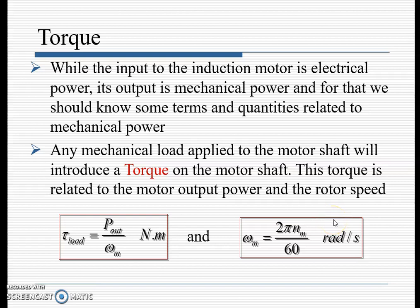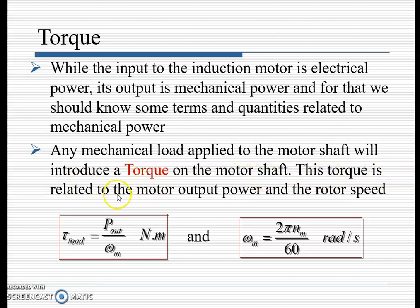Let's continue with the second video on induction motor torque. While the input to the induction motor is electrical power, its output is mechanical power. Any mechanical load applied to the motor shaft will introduce a torque on the shaft. This torque is related to the motor output power and the rotor speed. The formula for torque is T = P_out / ω_m, where the units are Newton-meters, and ω_m = 2π·n_m / 60.